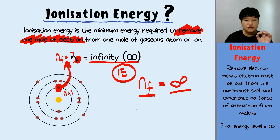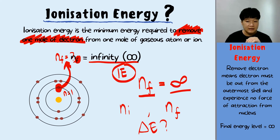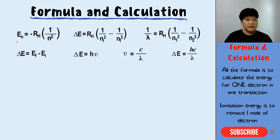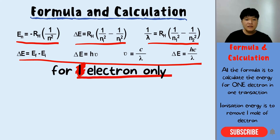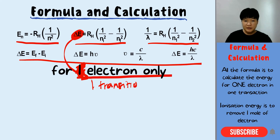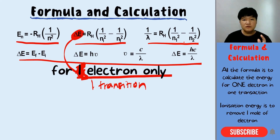Remember this because we need to know N_initial and N_final to calculate delta E. A kind reminder: all the formulas from the previous video — calculating energy, wavelength, frequency — are for one electron only. The energy calculated from those formulas is only for one electron and one transition.